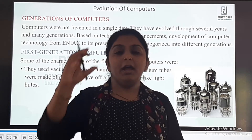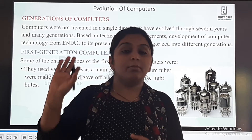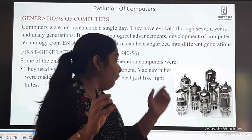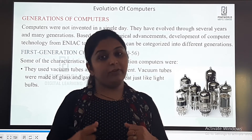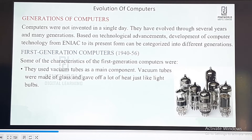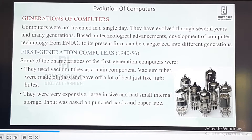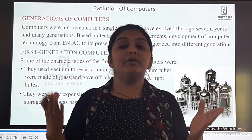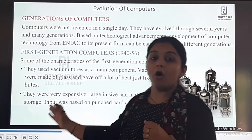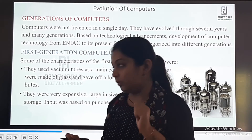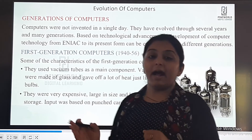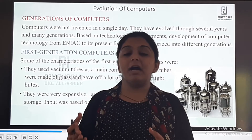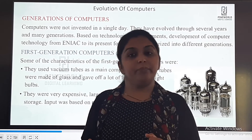Just like the light bulbs in our homes are made of glass and get very warm when switched on, these vacuum tubes were also made of glass and gave a lot of heat. They were very expensive, large in size, and had small internal storage. Input was based on punched cards and paper tape. The light bulbs in our homes are small, but these vacuum tubes were large in size and very expensive, with very limited internal storage.